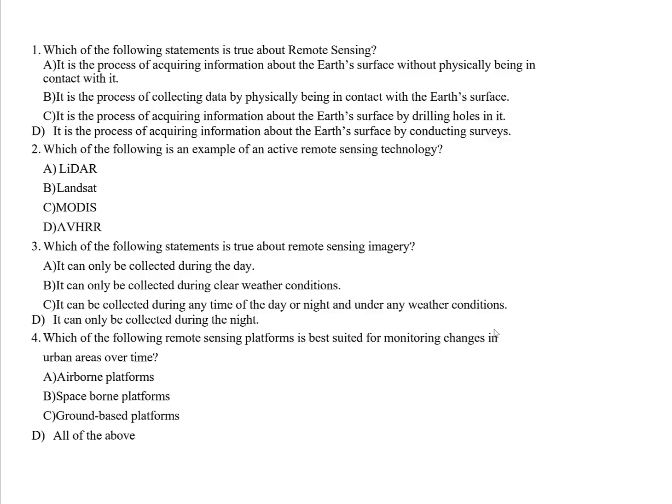Question one: Which of the following is true about remote sensing? Option A — it is a process of acquiring information about the surface without physically being in contact with it — is true, because remote sensing works at a distance. Option B, collecting data by physical contact, is false. Option C, drilling holes, and option D, conducting surveys, are also false. The correct answer is A.